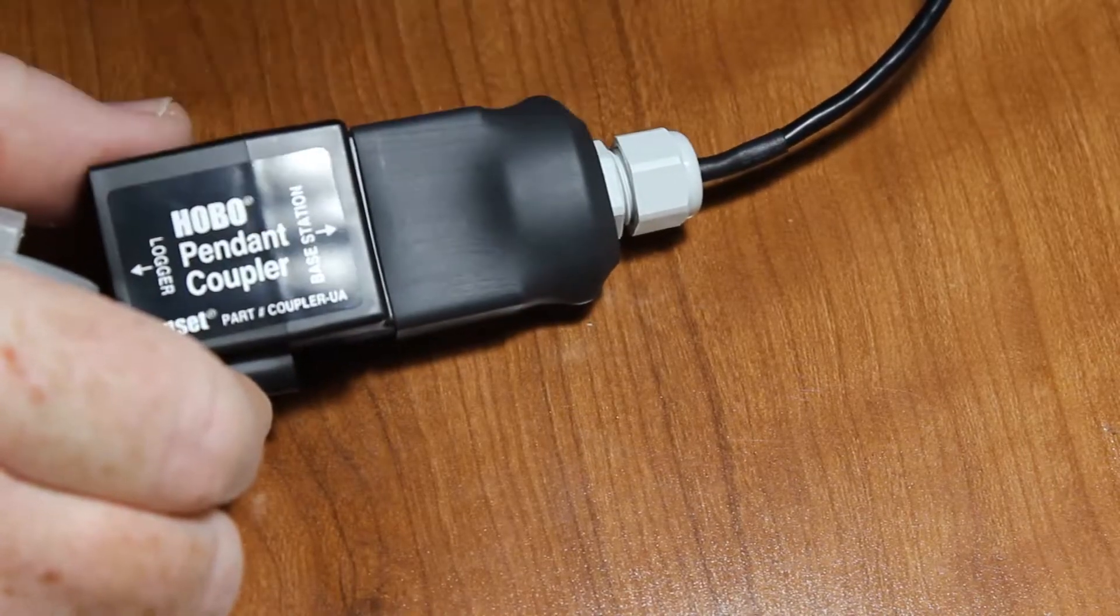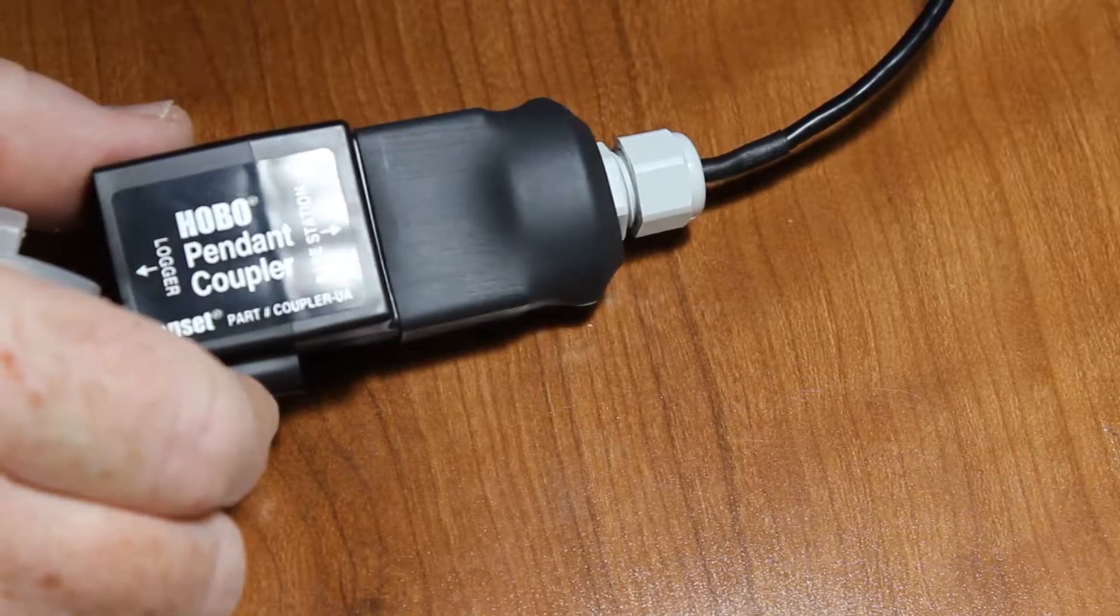This is a base U1, or what people call pendant coupler. It says pendant coupler on it. It's really the base U1. And you can see that there's a corresponding slot in here that the logger slides into.